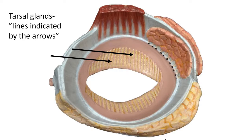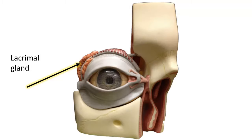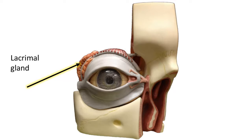The lacrimal gland is a large gland that provides lacrimal fluid to the eye. It is innervated by cranial nerve seven — the facial nerve. Lacrimal gland ducts carry fluid from the gland across the eye surface.